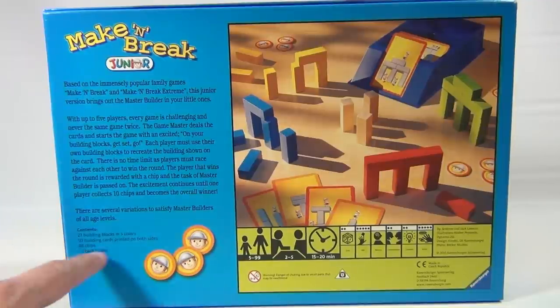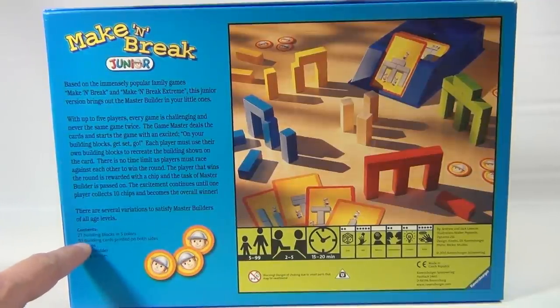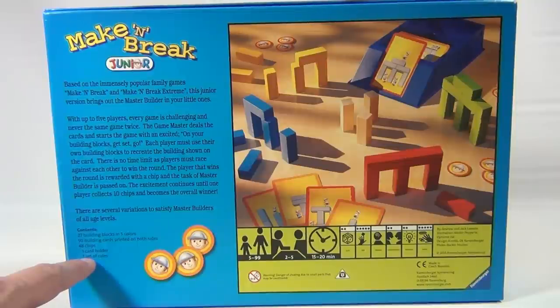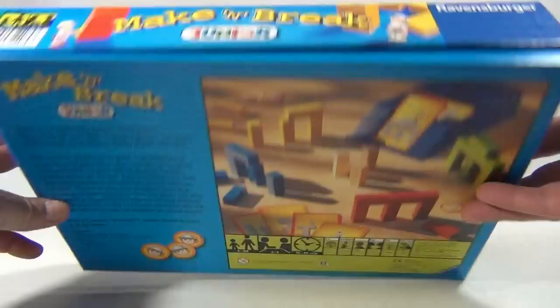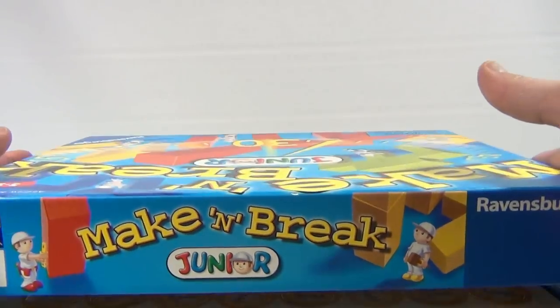Alright, get the whole idea? There's 27 blocks in five colors, 50 building cards, 48 chips, one card holder, and one set of rules. From ages 5 to 99, it takes about 20 minutes to play the game in total.